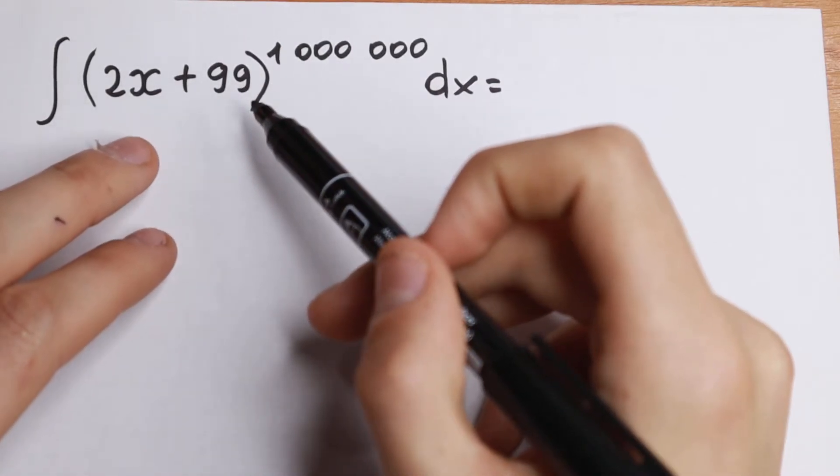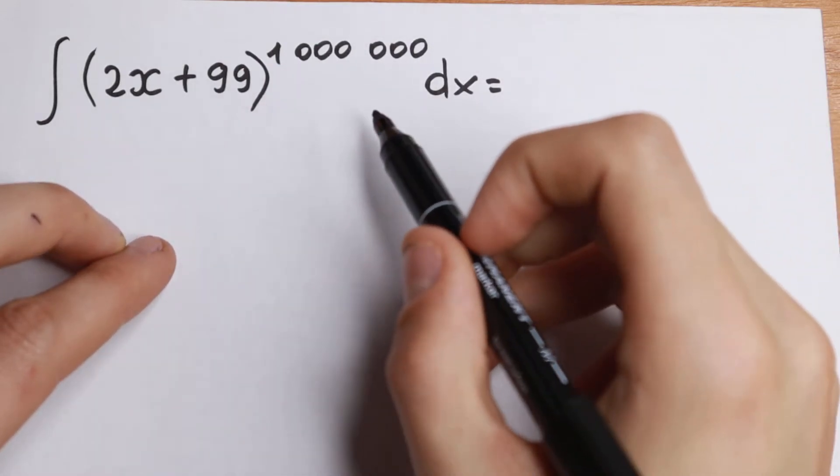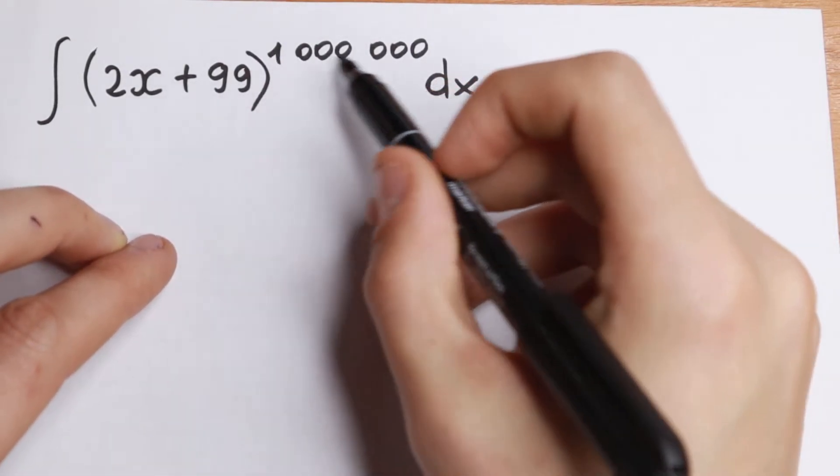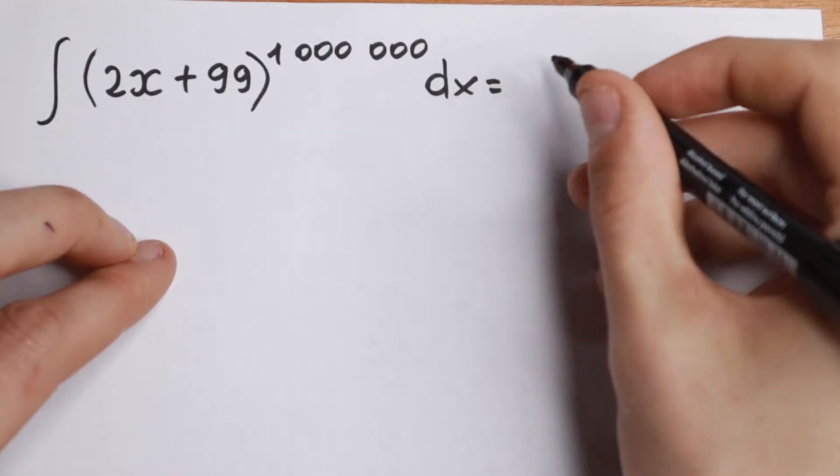We have the integral of (2x + 99) to the power of 1,000,000. On the first side, this integral is a hard integral because we have a 1,000,000 power, but I want to show you a really good method how to solve it.